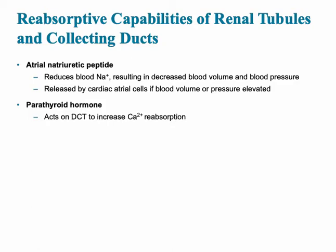There are two very important hormones that govern or control the reabsorptive capabilities of the renal tubules as well as the collecting ducts. These two are called atrial natriuretic peptide, sometimes abbreviated as A and B, which reduces blood sodium, therefore reducing blood volume and blood pressure since they're both related. This particular peptide is released by cardiac atrial cells, as the name suggests.